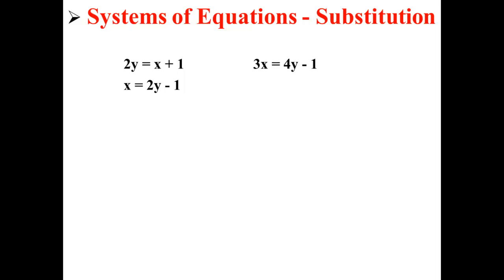Now that we know what x is equal to, we can plug that into the second equation instead of writing x. Here, we write 3 times 2y minus 1 is equal to 4y minus 1. Next, we perform the distributive property. So, we have 6y minus 3 is equal to 4y minus 1.